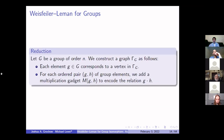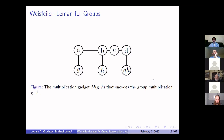For the reduction, given a group of order n, we construct a corresponding graph Γ_G. First, every group element gets its own vertex. Then we add multiplication gadgets to encode the relation g times h. For every ordered pair, we have a multiplication gadget. For group elements g, h, and the product g times h, we add four new vertices to encode the group multiplication.